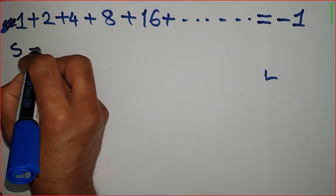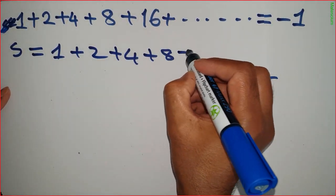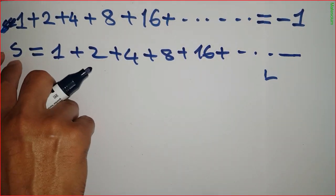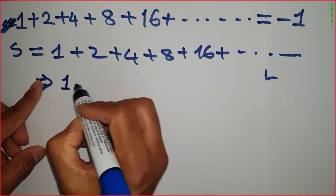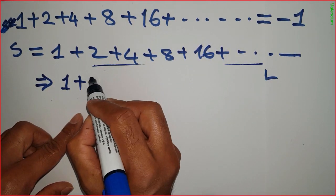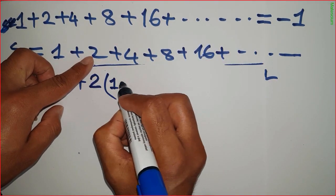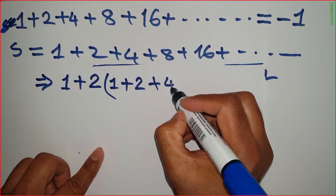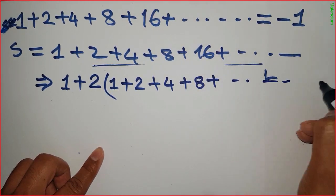Let's consider S equals 1 plus 2 plus 4 plus 8 plus 16 plus dot dot dot. I can do a mathematical engineering here: keep this 1 the same and take 2 common from the remaining part. So if you take 2 common: 3 becomes 1, 4 becomes 2, 8 becomes 4, 16 becomes 8, and so on.